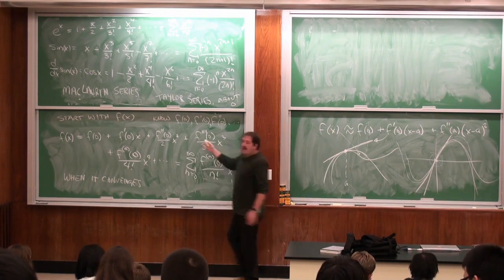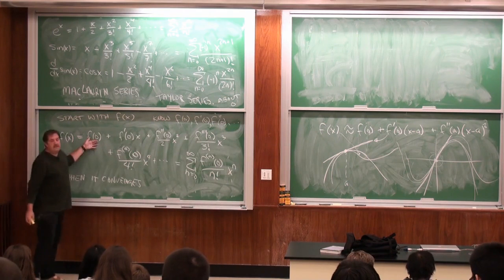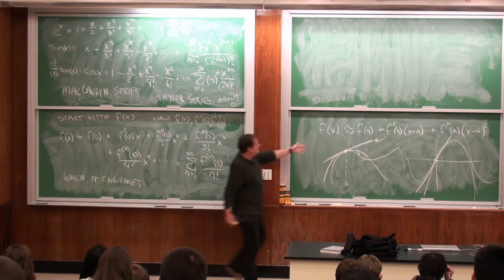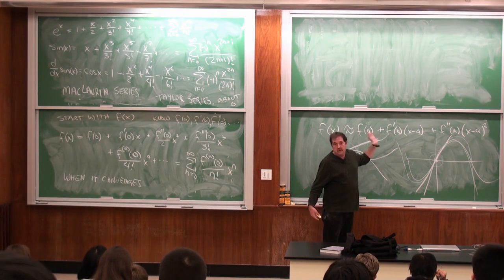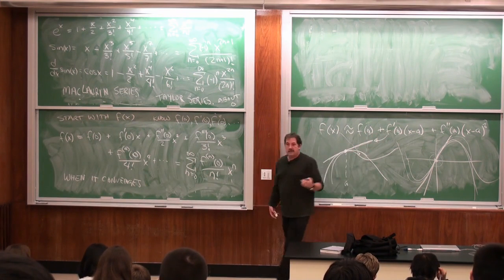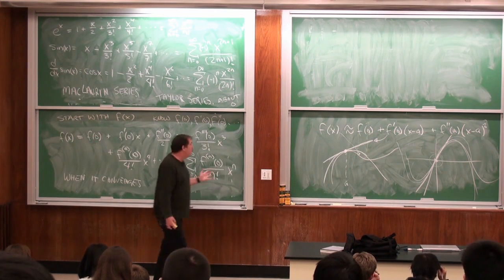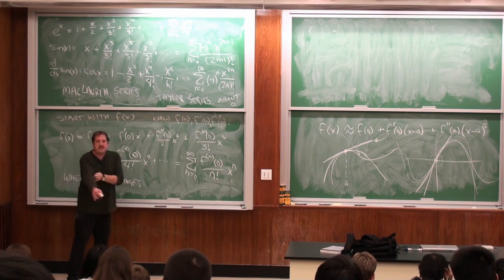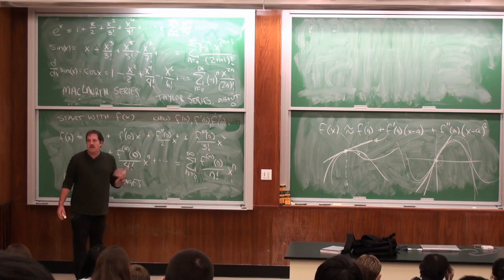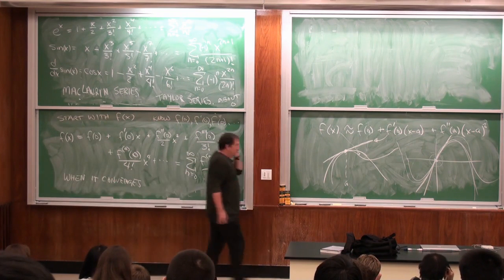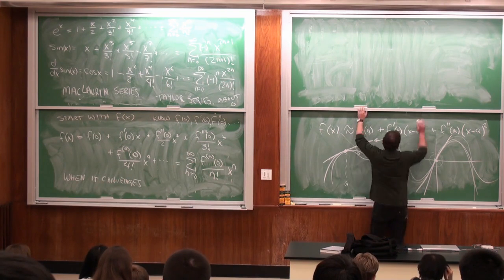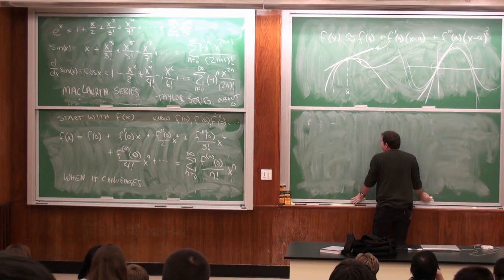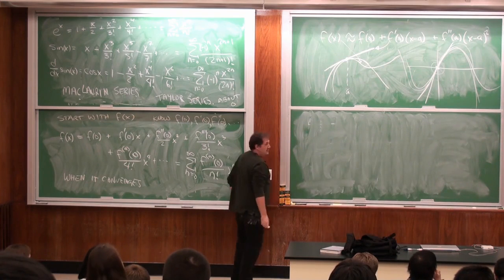Notice that this process relied on derivatives at zero. We can also do it with derivatives at other points — at any point where we can calculate the derivative. That's actually what's called the Taylor series. A Maclaurin series is a Taylor series with a equals zero. Let me do one more example of the Maclaurin series.